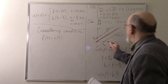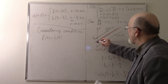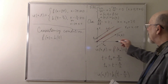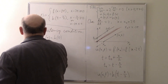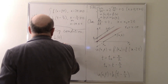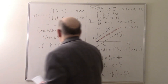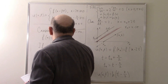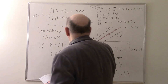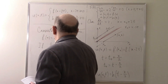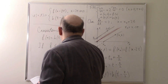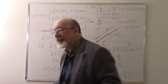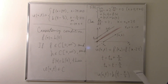To have a unique and continuous solution, we need the consistency condition: f(0) equals H(0). If f is continuous on [0, ∞) and H is continuous on [0, ∞), and f(0) equals H(0), then the function u(x, t) is continuous. This is our conclusion.